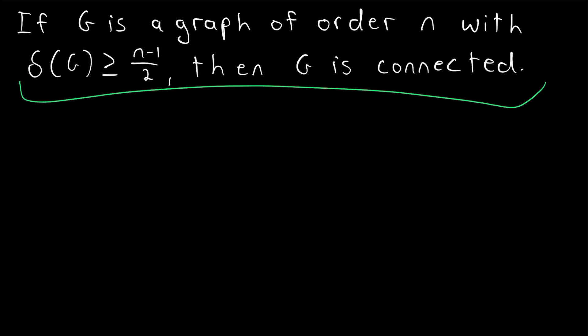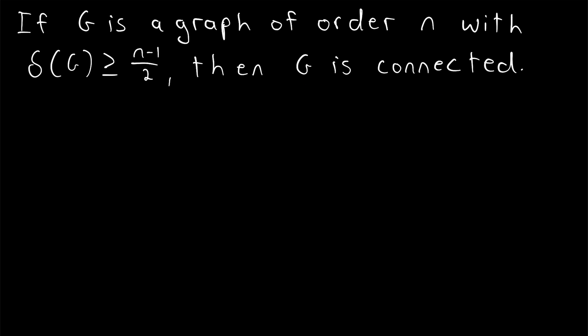This condition is not necessary for a graph to be connected, so not every connected graph has this property, but if a graph does have this property, it's most certainly connected. I recommend trying to prove it yourself before we move on, but we'll move on now.